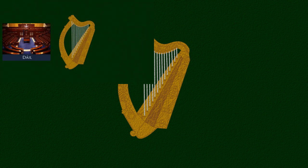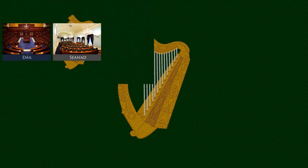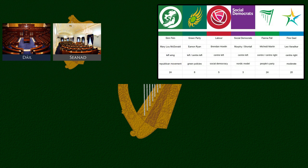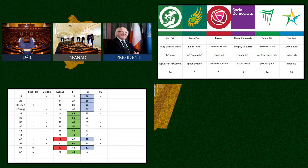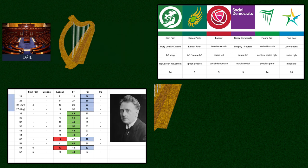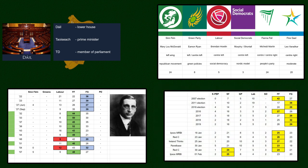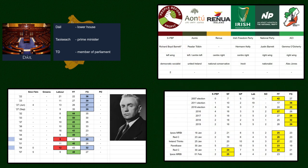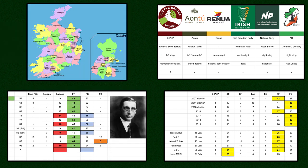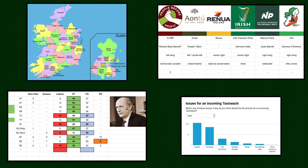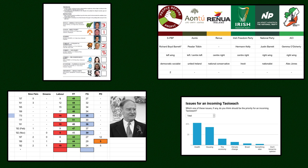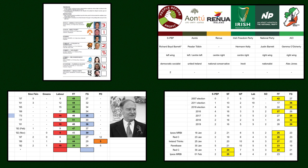The Irish election takes place on Saturday the 8th of February. In this video I'm going to talk about the Irish electoral system and how it works, the differences between the major parties, and a brief run-through of all the elections held in Ireland since Independence to give some context to this year's election. Finally, I'll talk about the campaign, major issues, and what we can expect on Saturday. I'll include timestamps in the video description so you can skip ahead.